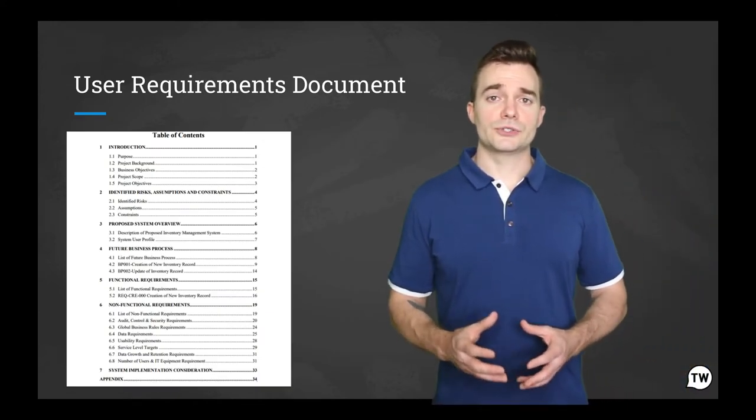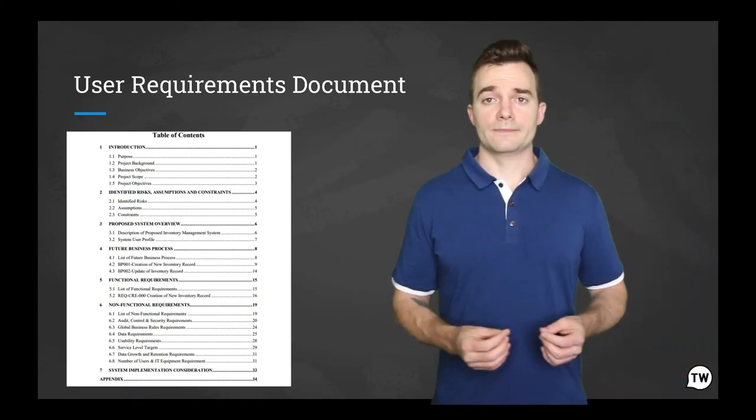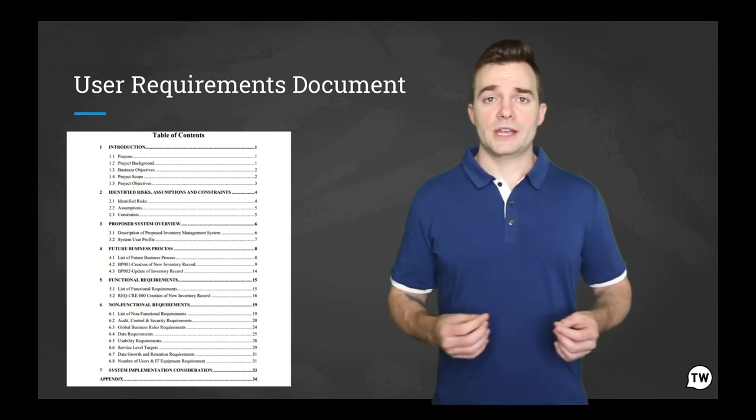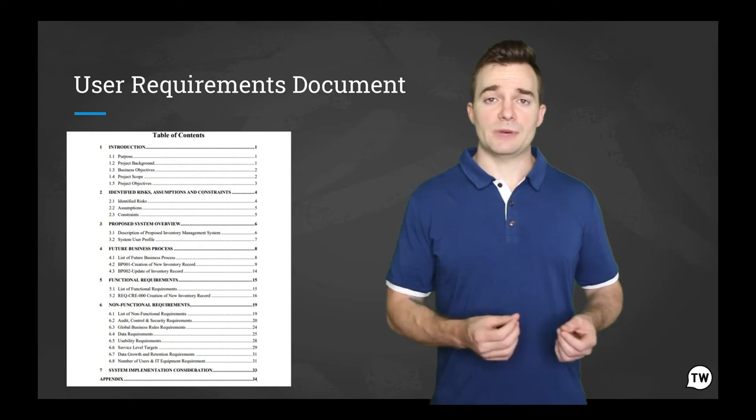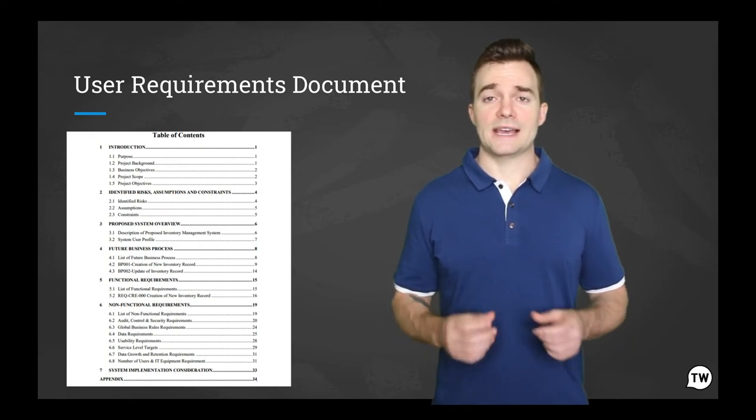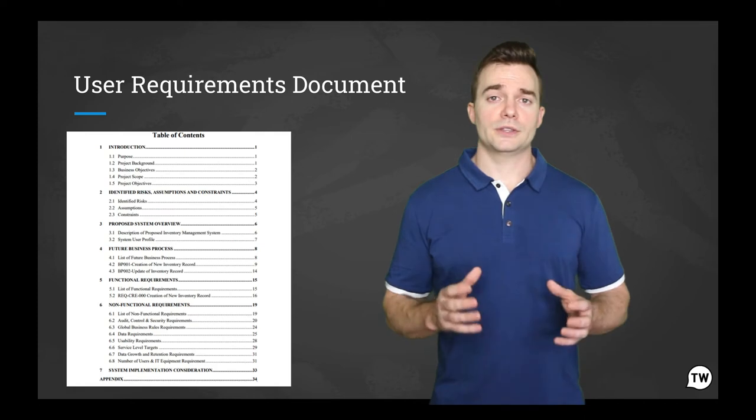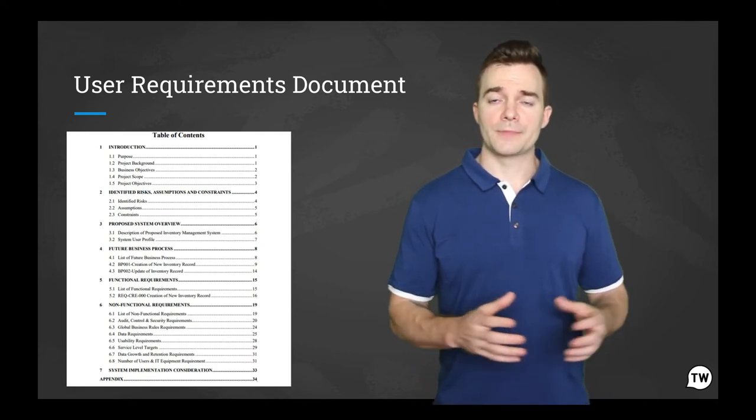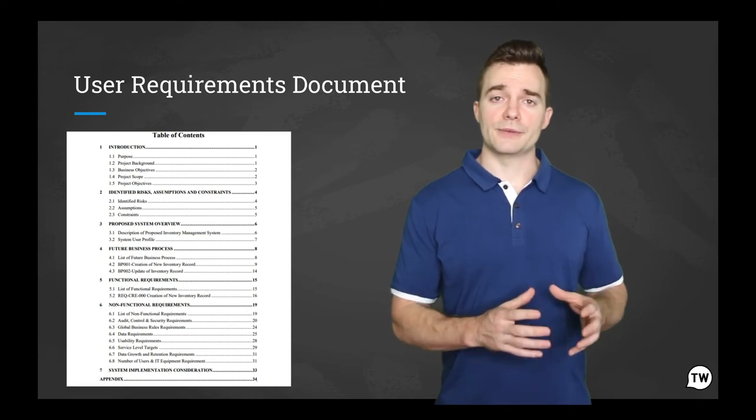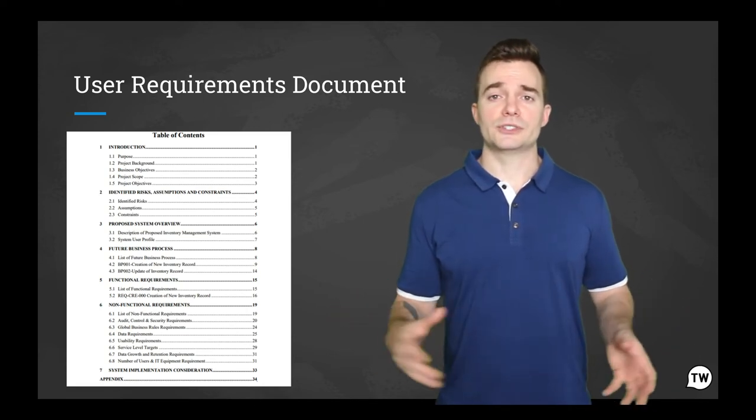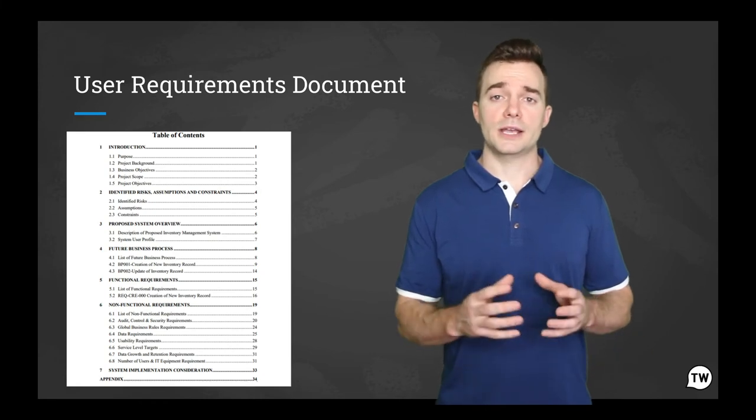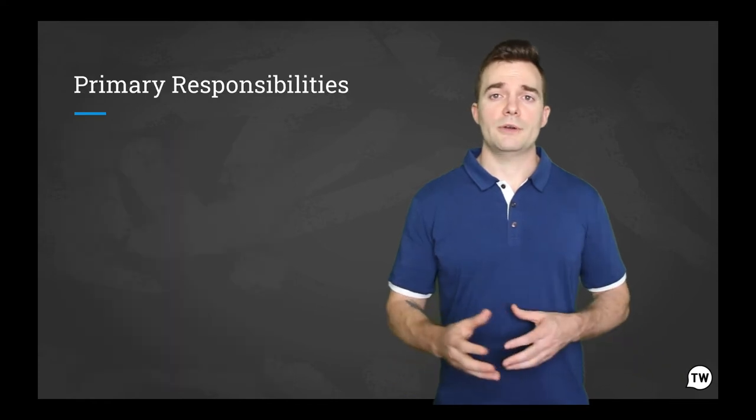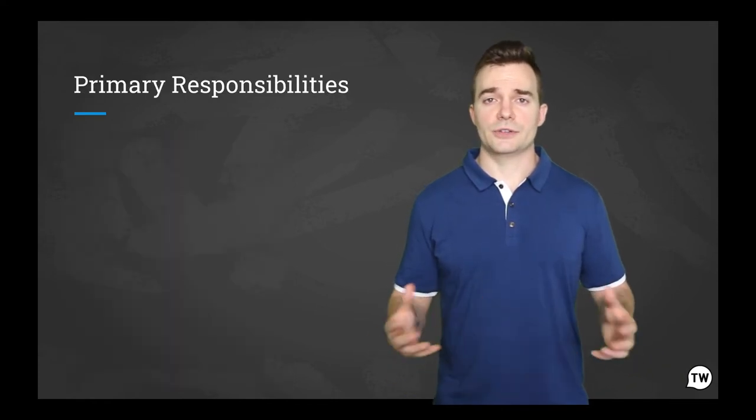The final example on our list is the user requirements document or URD. Now here we have a table of contents taken from a user requirements document. It is also known as user requirements specification and is a technical document that specifies what users expect the software to do. The information documented in a URD is meant to precisely determine what the software must do and becomes part of the contractual agreement. A customer cannot demand features that are not in the URD while the developer cannot claim the product ready if the product misses an item of the URD. Now that we've looked at the types of documentation and their examples, let us now move to a technical writer's primary role and responsibility.